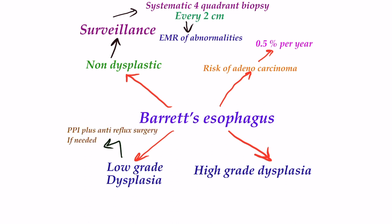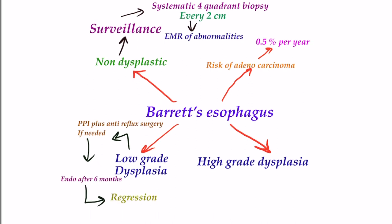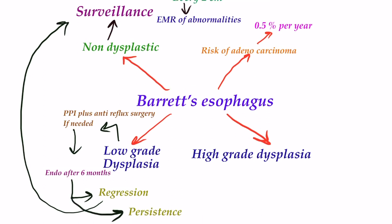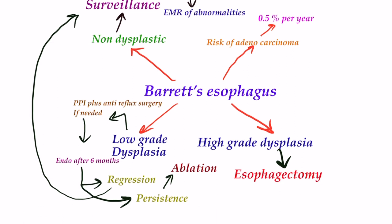For low-grade dysplasia, repeat endoscopy with surveillance biopsies is performed at six months. If there is regression of dysplasia on two consecutive exams, then surveillance continues as for non-dysplastic Barrett's. If dysplasia is persistent, ablative therapy is recommended to reduce progression risk. Low-grade dysplasia patients may also directly choose ablation rather than surveillance.